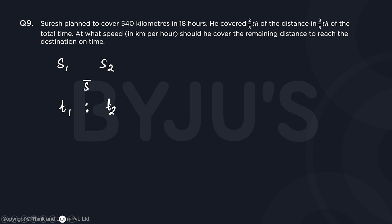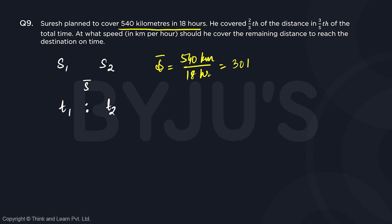Now, using what we know overall, the average speed is going to be the total distance divided by the total time, which gives us 30 kilometers per hour. So that goes at the center.